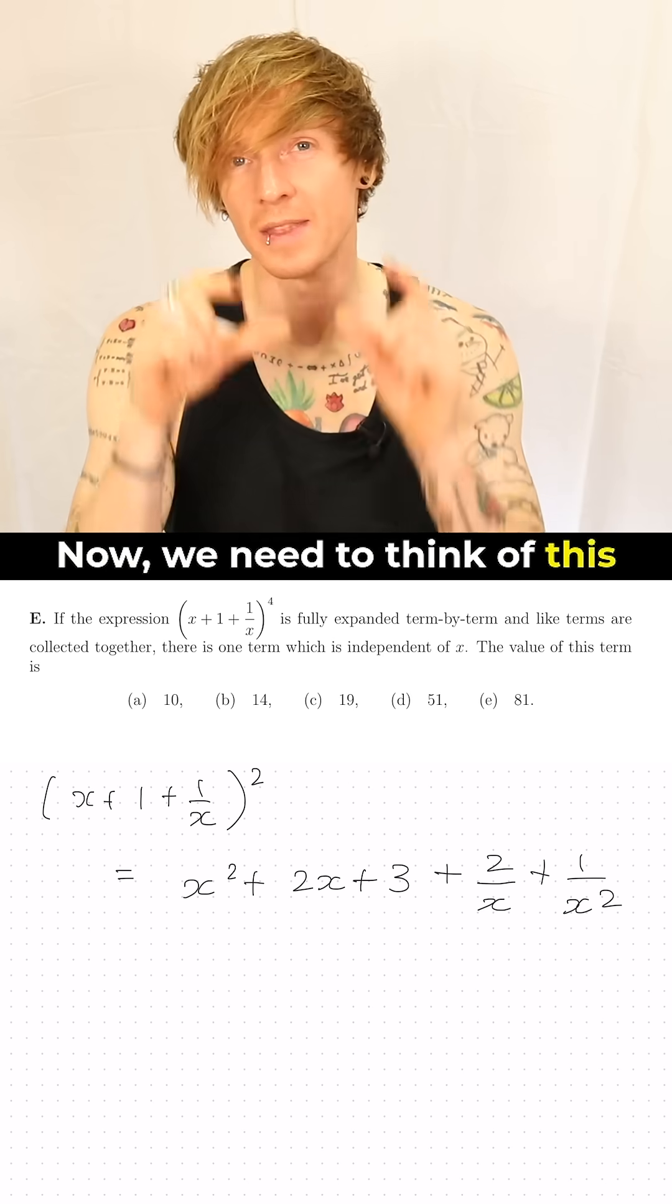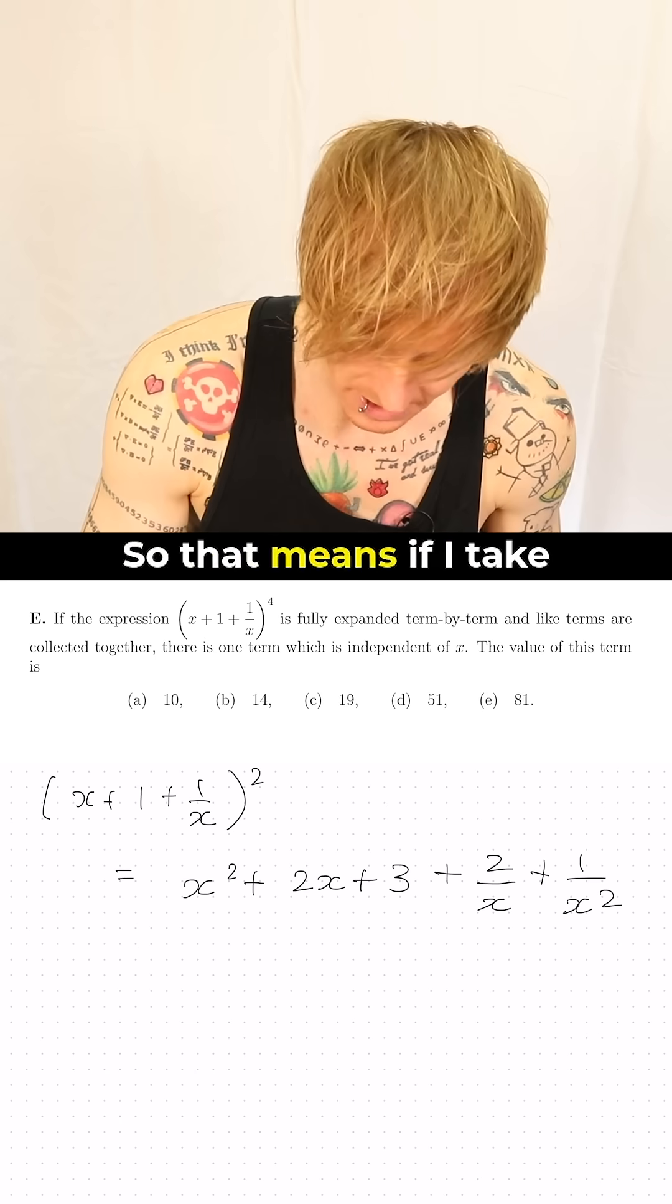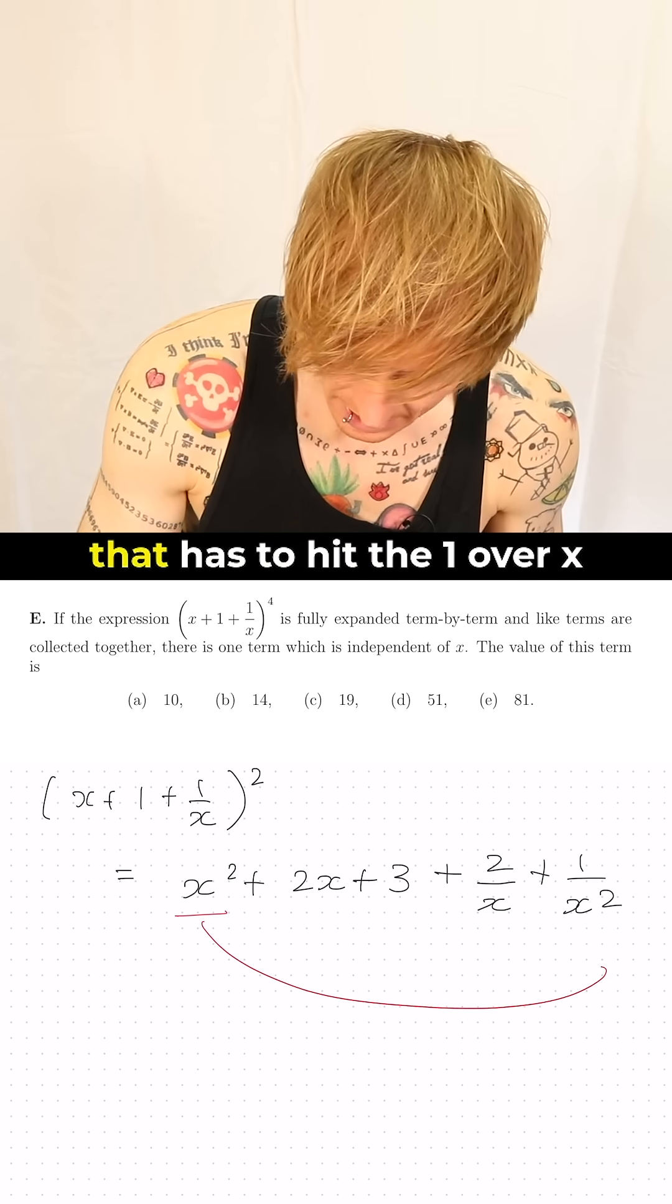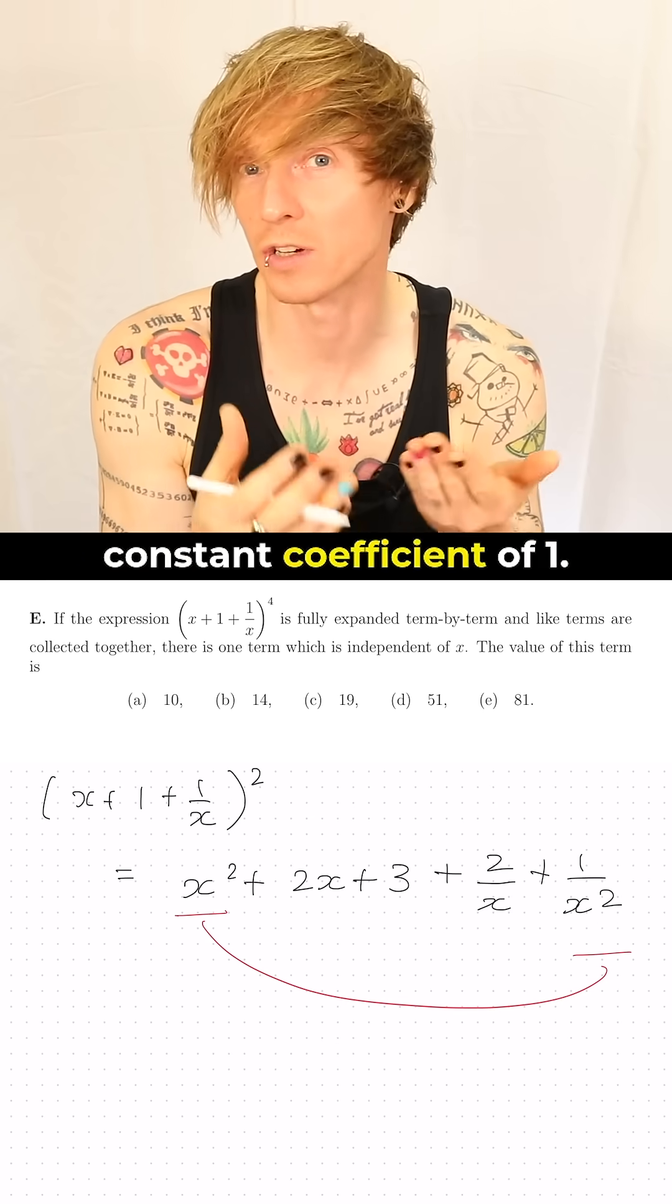Now we need to think of this multiplied by itself so that we end up with constants, so that means if I take the x squared that has to hit the 1 over x squared and that gives us a constant coefficient of 1.